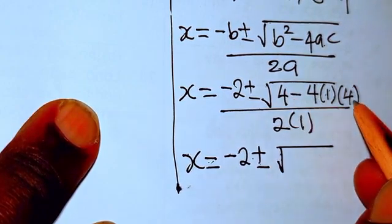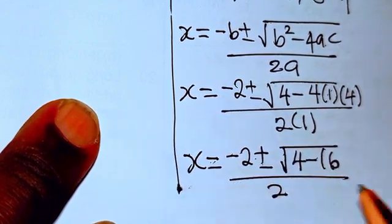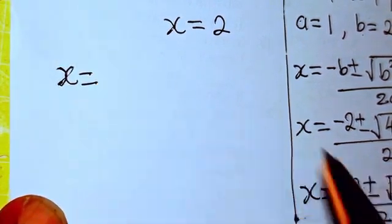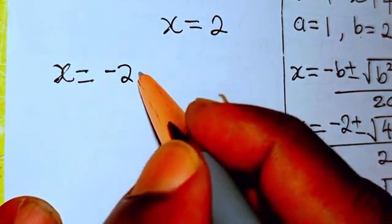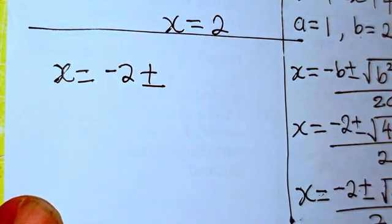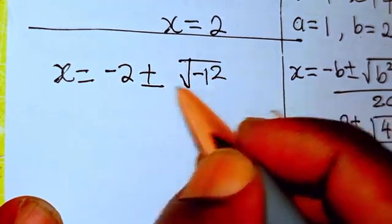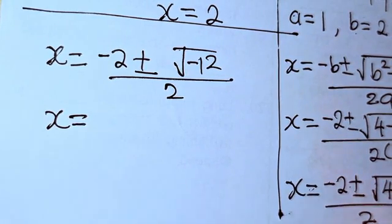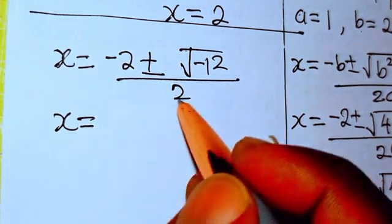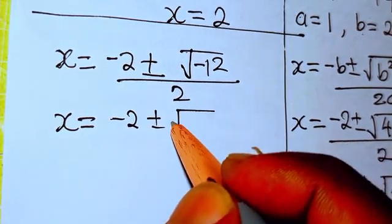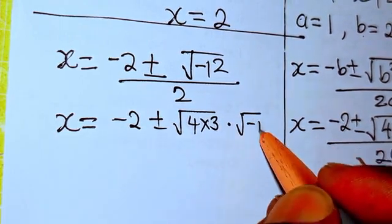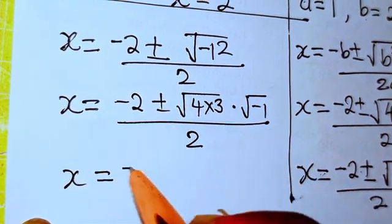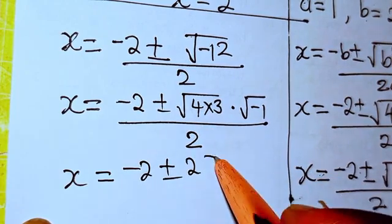Inside the square root we have 4 minus 16, which gives minus 12 over 2. So x equals minus 2 plus or minus the square root of minus 12. We can rewrite that as minus 2 plus or minus the square root of 4 times 3 times minus 1, which simplifies to minus 2 plus or minus 2 root 3 times i, all over 2.